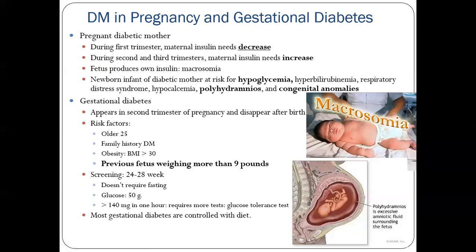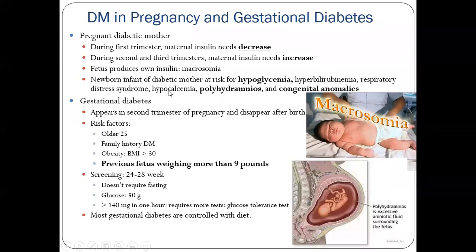If extra glucose passes through the placenta and is metabolized by the fetus, there is a chance to develop gestational diabetes, causing excess insulin to be secreted by the fetus, which acts as a growth hormone. After birth, the newborn may develop complications like hypoglycemia — a sudden drop in glucose — due to high maternal glucose or increased fetal insulin production. Gestational diabetes appears in the second trimester and disappears after the birth of the baby.